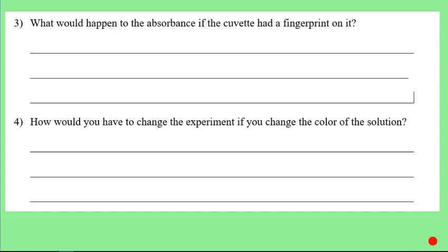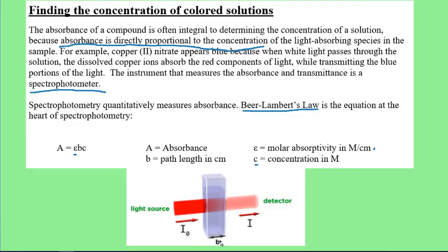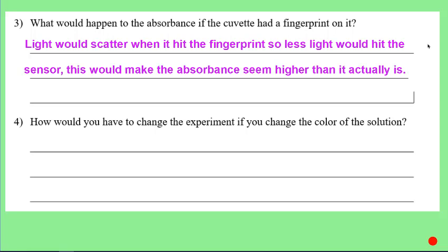Think about what would happen to absorbance if the cuvette had a fingerprint on it. A fingerprint will scatter the light more than a clean surface. If some light is scattered before it even reaches the solution, it appears that the solution absorbed more than it actually did — less light reaches the detector. This makes the absorbance seem higher than it actually was, so we would assume the concentration is greater than it actually is.